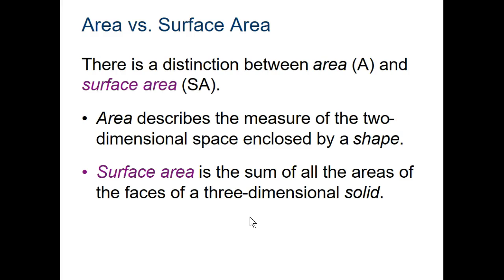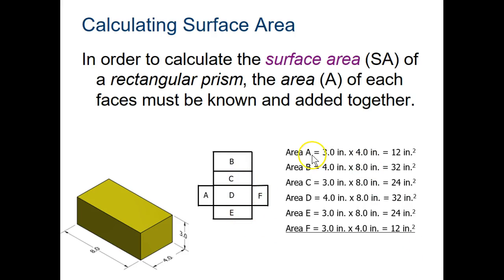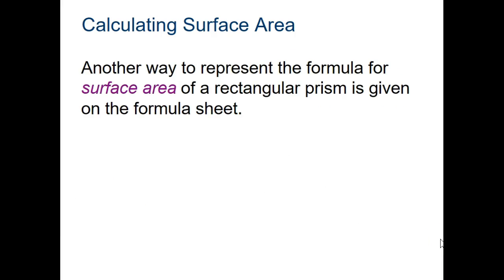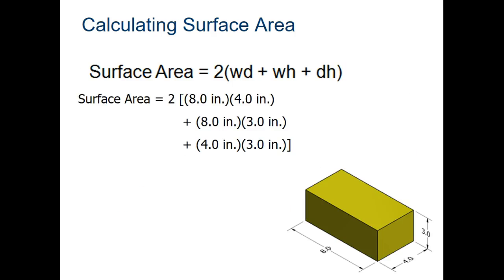Surface area is different from area. Area is a two-dimensional shape; surface area is for a three-dimensional shape. You have to include all of the faces of the three-dimensional object. For example, a rectangular prism has six sides — B and D are the same, A and F are the same, C and E are the same. To find the total surface area, add the areas of all faces together. The formula is: two times the quantity of width times depth, plus width times height, plus depth times height.